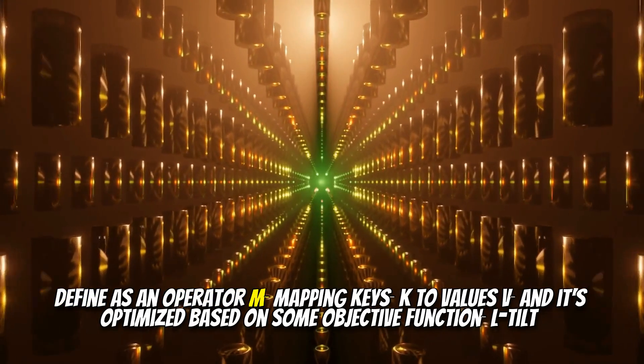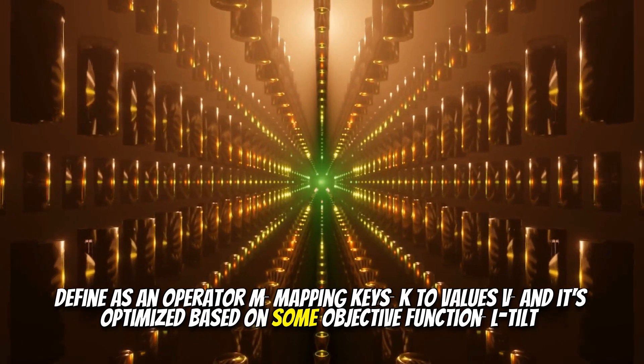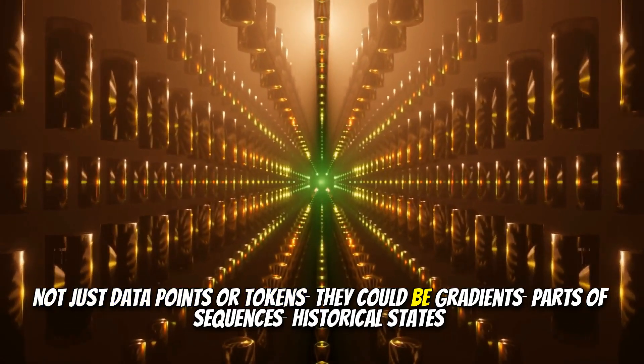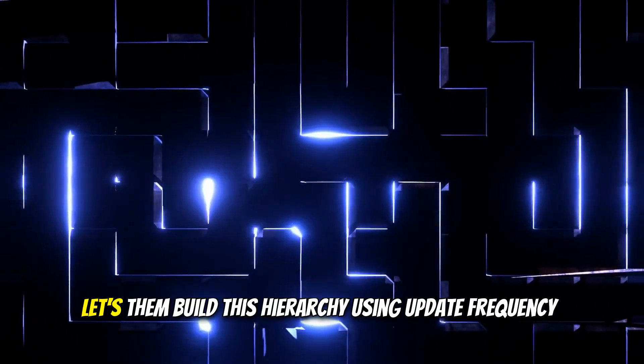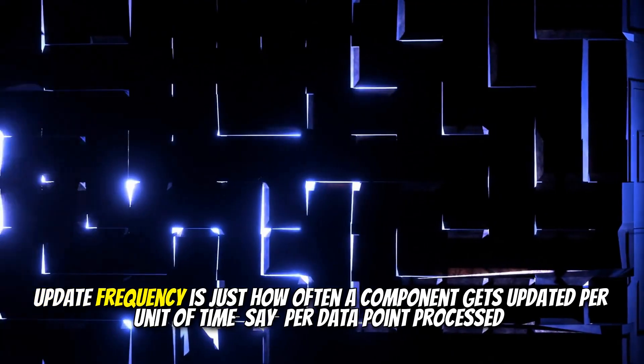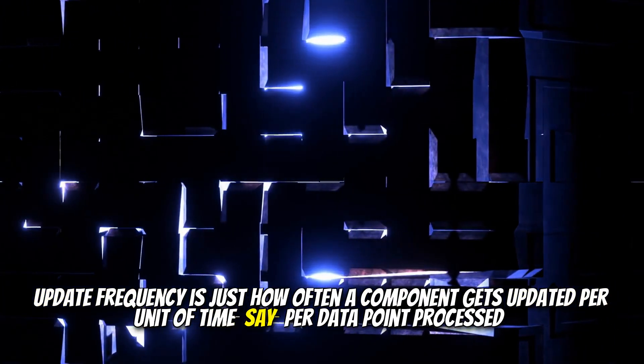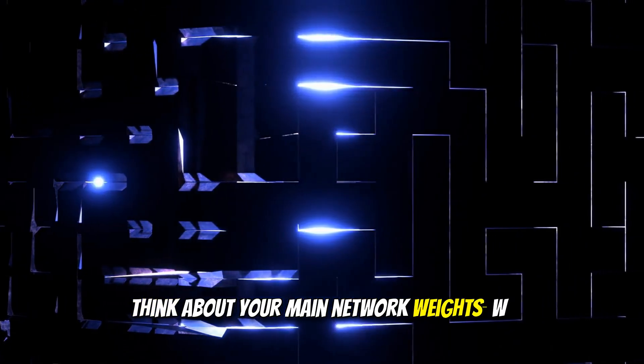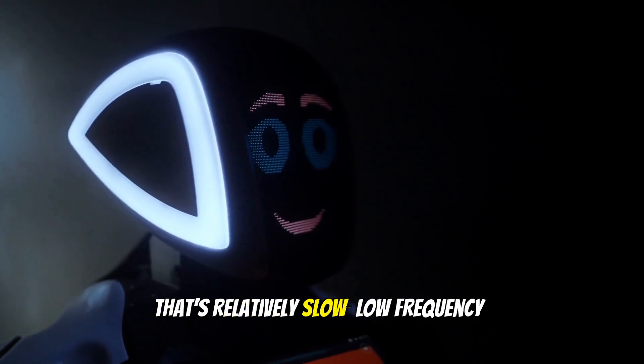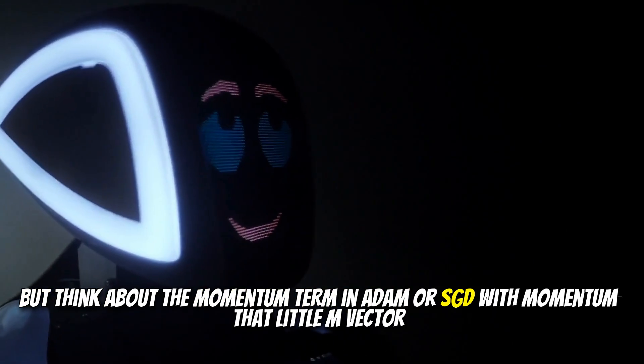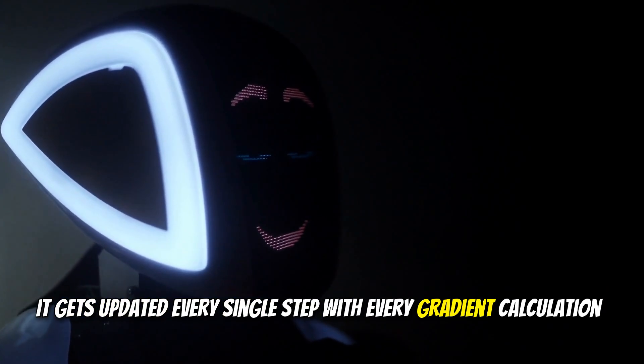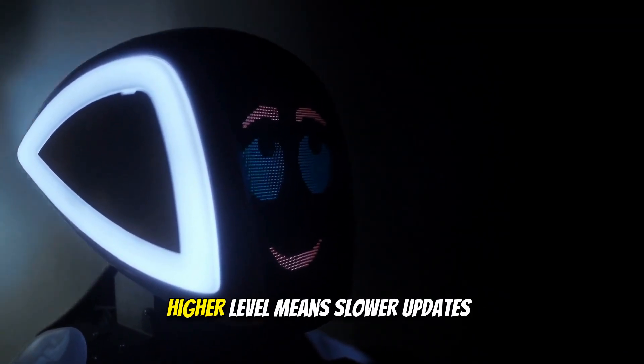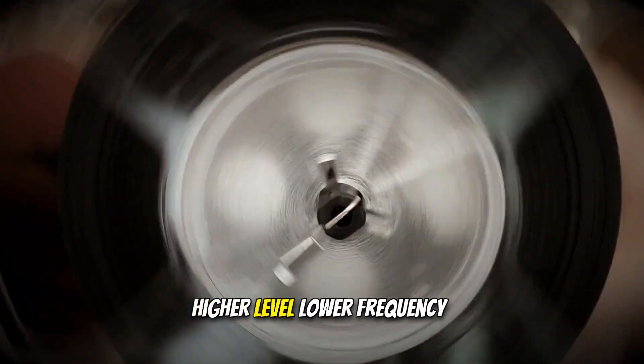Yeah, this distinction is important for their framework. Memory, they define very simply. It's just any neural update caused by an input. A change happens. Okay, like a synapse changing strength slightly. Right. But learning is defined as the process of acquiring effective and useful memory. It's not just any change. It's change that helps achieve a goal. So touching a hot stove, the immediate reaction is a memory trace. Learning is figuring out not to touch stoves in the future because it's useful. Perfect analogy. And the core mechanism they propose for achieving this useful learning across all parts of a system is the associative memory. Right. You mentioned that. Defined as an operator, M, mapping keys, K to values, V. And it's optimized based on some objective function, L-tilt. Yep. And the key thing is, these keys and values can be anything, not just data points or tokens. They could be gradients, parts of sequences, historical states. That flexibility seems crucial. It lets them build this hierarchy using update frequency. Exactly. Update frequency is just how often a component gets updated per unit of time, say, per data point processed.